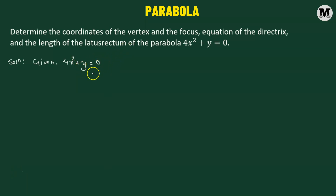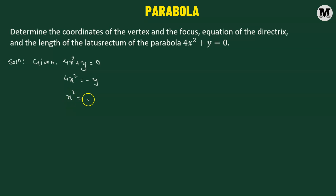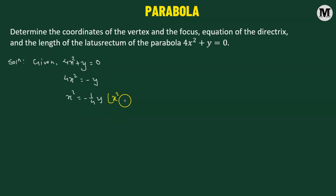We are going to rewrite this equation as 4x squared equals negative y, which gives us x squared equals negative one-quarter y. We write it in this particular fashion because it has similarity with the standard form x squared equals negative 4py.